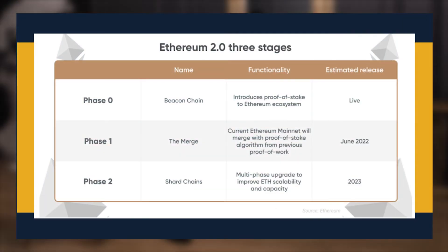Ethereum 2.0 is a significant update that will see Ethereum's consensus migrate from proof-of-work to proof-of-stake. Among several benefits, the update aims to put Ethereum rates in line with other market rivals by dramatically boosting transaction processing capacity and eliminating the need for miners. While it's difficult to avoid paying gas fees entirely when using the Ethereum blockchain, there are various methods you can use for lowering them.